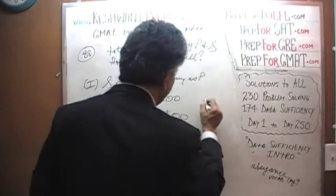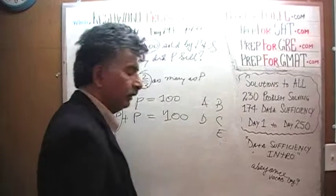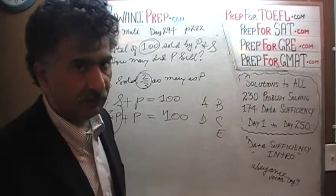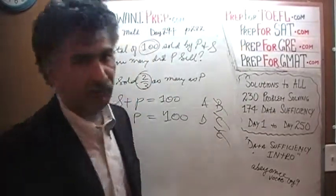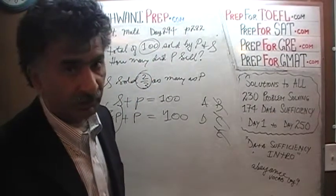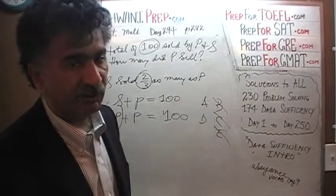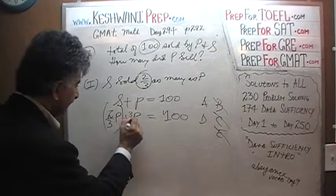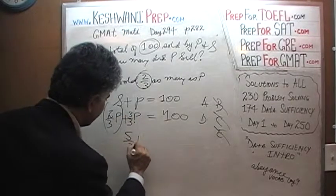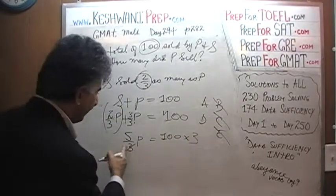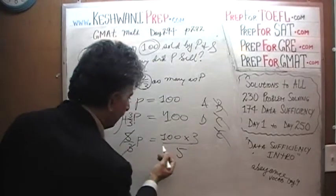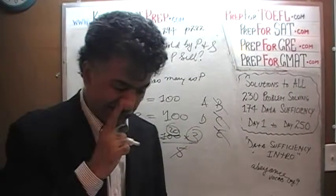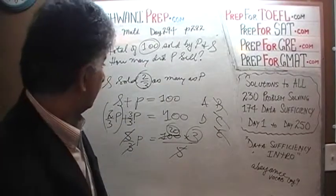The first statement by itself does the job quite nicely. The answer cannot be B, C, or E — it would have to be A or D. Let's do it out for learning purposes: two-thirds P plus P equals five-thirds P. Five-thirds P equals 100, which means five P equals 300, and therefore P equals 60. How many tickets does P sell? The answer is 60. But that was a waste of time — we already knew the first statement was sufficient.